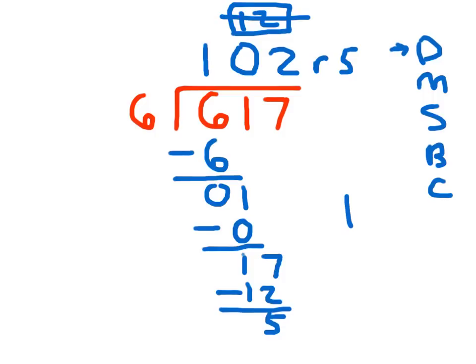Again, my check for this problem would be 102 times 6, 2, 1, 6, plus 5 is 617, so it checks.